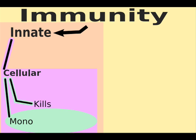After mono is 'kill,' which refers to natural killer cells. Natural killer cells release proteins that kill bad cells.